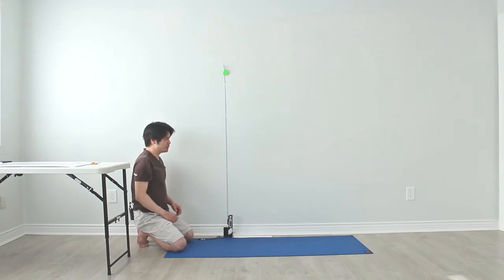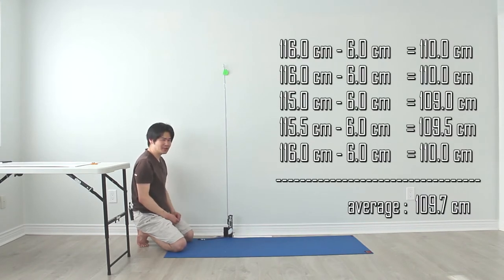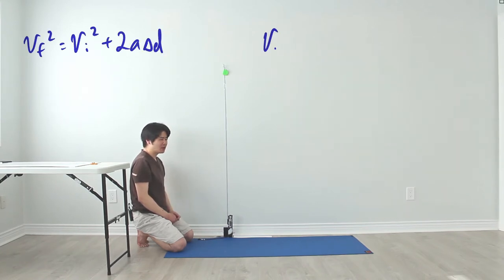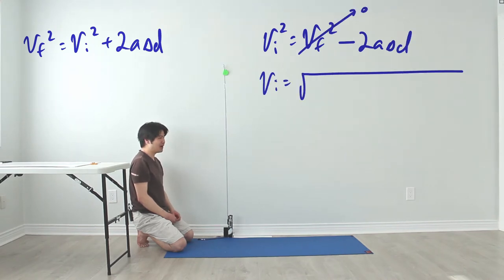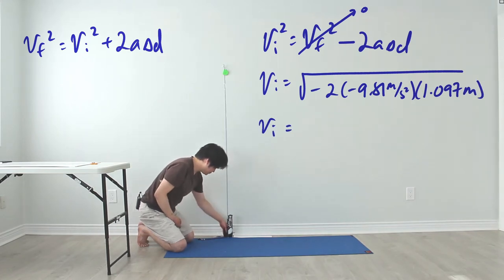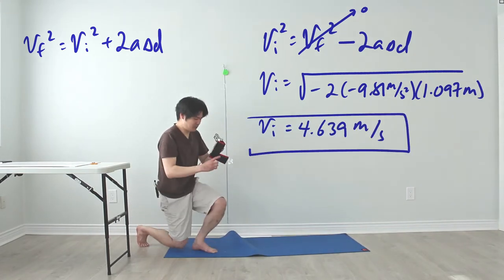With those sets of givens, we can now determine the initial muzzle velocity by using this particular formula. After isolating and solving for Vi, we find out that the value of Vi is 4.639 meters per second.